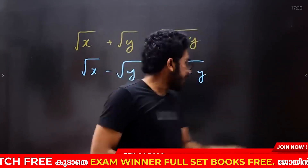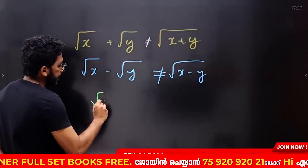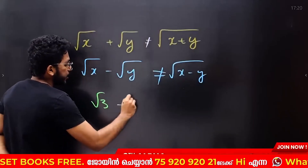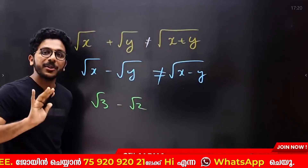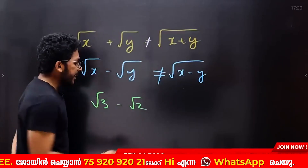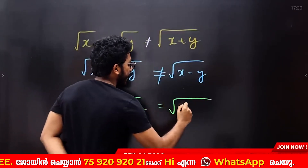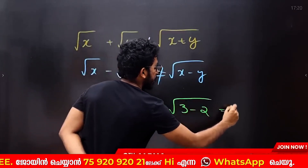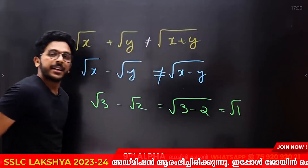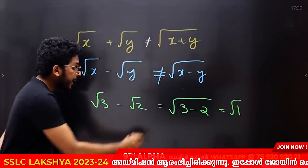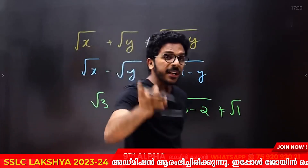For example, you have root 3 minus root 2, right? You can't do it. You can start the same thing, simplify it, and get the root — but that is wrong! Wrong! Wrong!